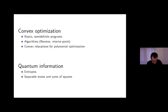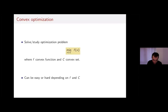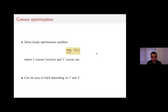I'll start with some basics about convex optimization — some examples and definitions. Convex optimization is about problems where I want to minimize a convex function f subject to a constraint where x lives in a convex set c. It could also be that I want to maximize a concave function, since a concave function is the negative of a convex function, and I'll still call that a convex optimization problem.